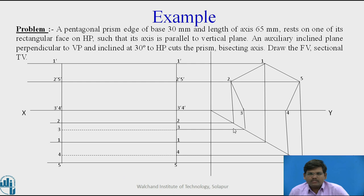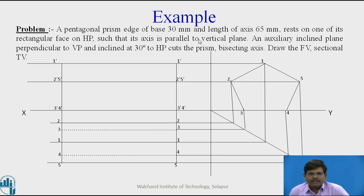This is the complete projection of the solid resting on a rectangular face with its axis parallel to both HP and VP. Further, an auxiliary inclined plane perpendicular to VP and inclined at 30 degrees to HP cuts the prism. When a plane is perpendicular to VP, it is seen as a line view in the front view, and its inclination with HP is also seen in the front view. So we draw the cutting plane in this fashion.